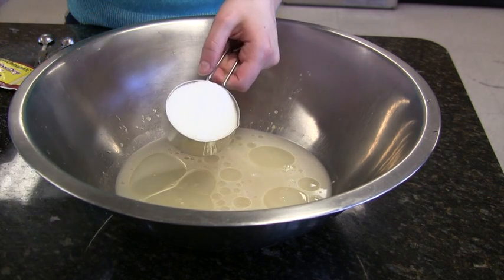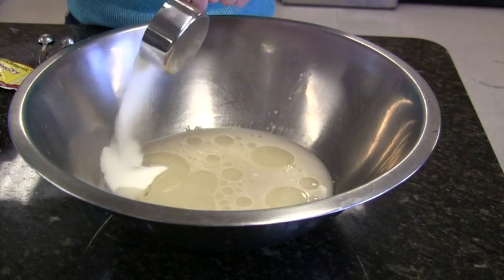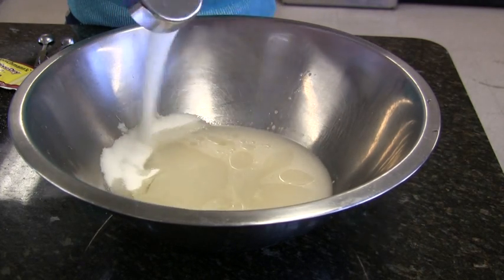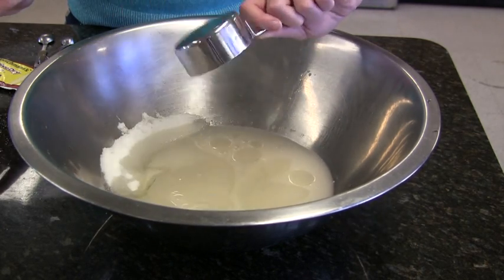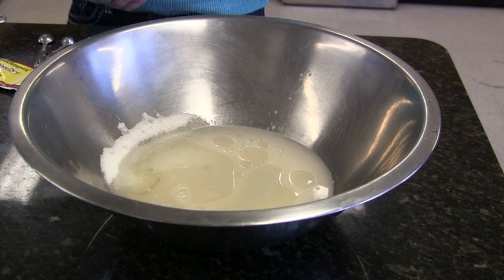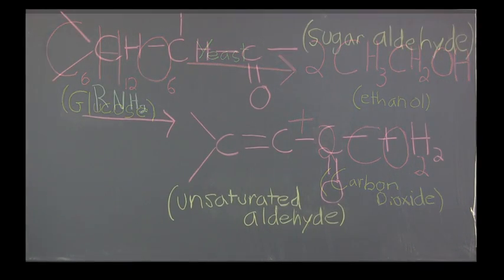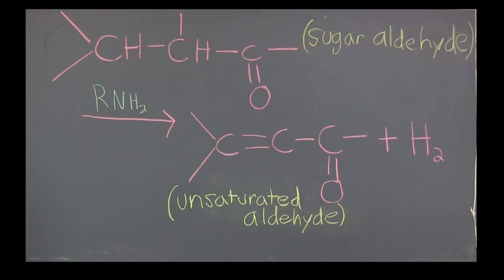The next ingredient to add is the sugar. The sugar serves a few different purposes, beyond making the bread taste sweet of course. The sugar acts as fuel for the yeast in its fermentation reaction. When heated, the sugar also goes through processes called Maillard reactions that contribute to the brown crust on bread.